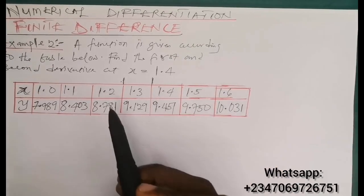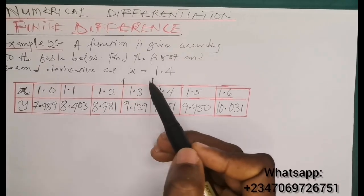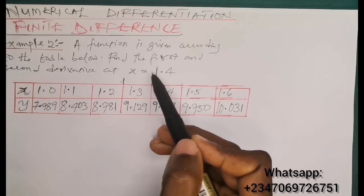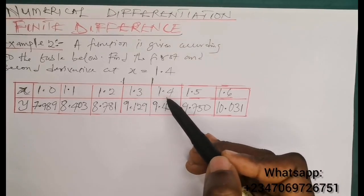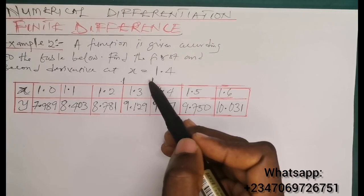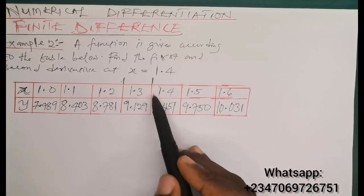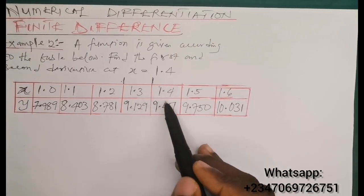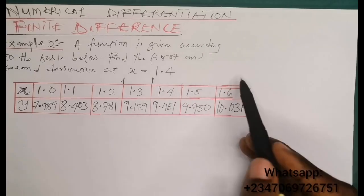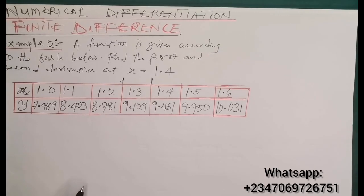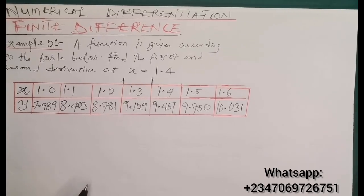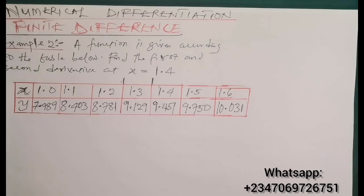The point of interest, x equals 1.4, lies in the back of the table — directly after the center — which means it lies in the backward portion. For that reason, we are going to employ the backward difference method to approximate these derivatives.